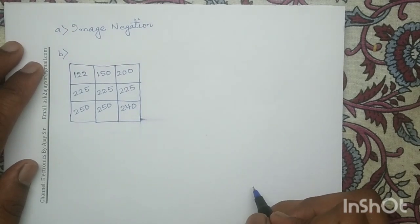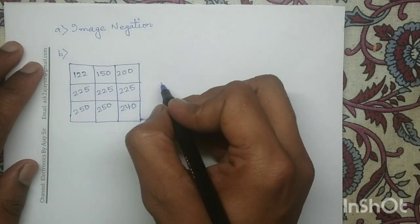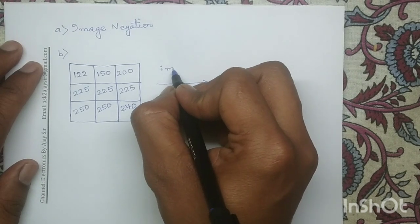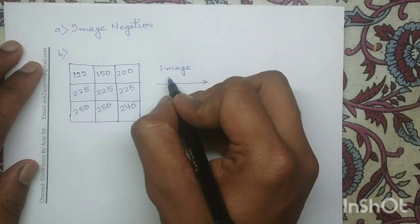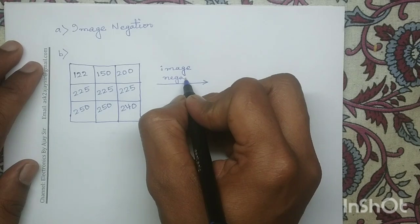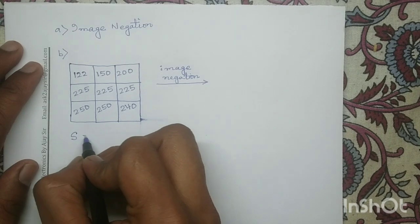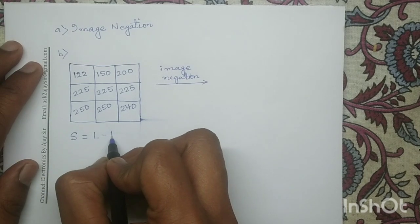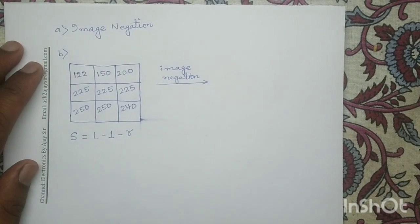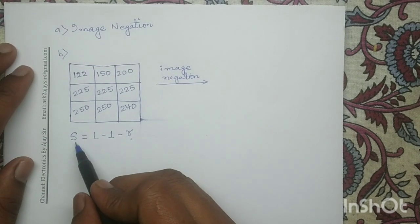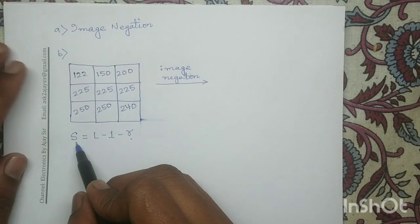On this given input digital image, we will apply the image negation operation. The general equation of image negation is S equals L minus 1 minus R, where R is the input image pixel intensity level and S is the output image pixel intensity level.